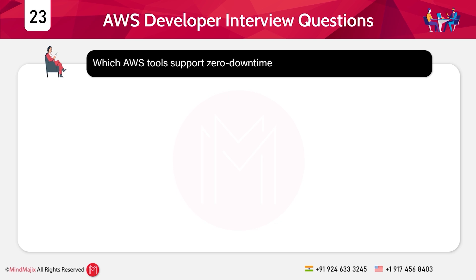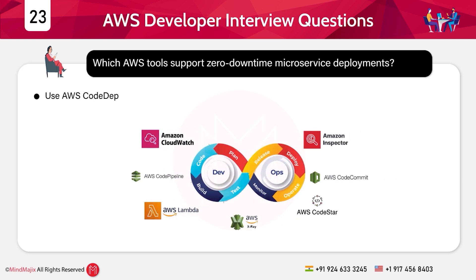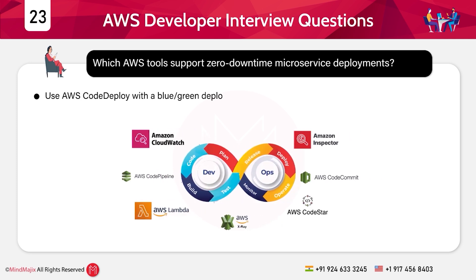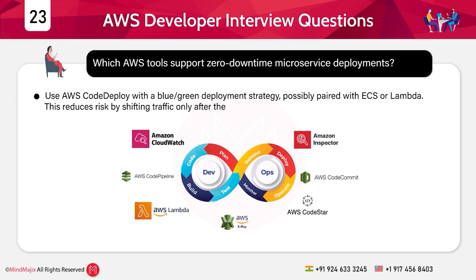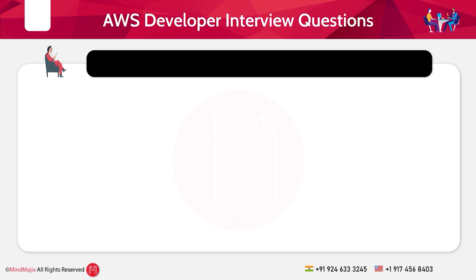Question 23: Which AWS tools support zero-downtime microservice deployments? Answer: Use AWS CodeDeploy with a blue/green deployment strategy, possibly paired with ECS or Lambda. This reduces risk by shifting traffic only after the new version passes health checks.